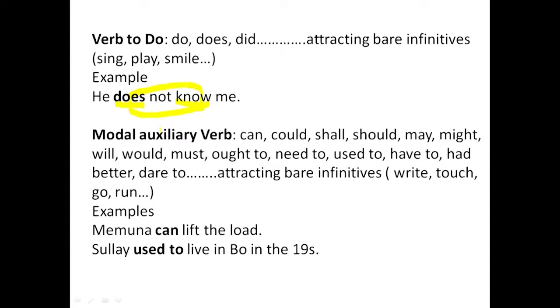These modal verbs are all auxiliary verbs. They could only be seen to be auxiliary verb if after them you have a main verb — an action verb. The auxiliary verb with the action verb together make up what we call a verb phrase. Grammatically they are referred to as a verb phrase, though linguistically the entire predicate is called verb phrase.